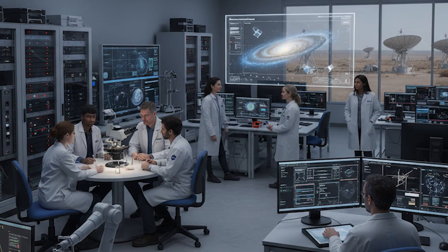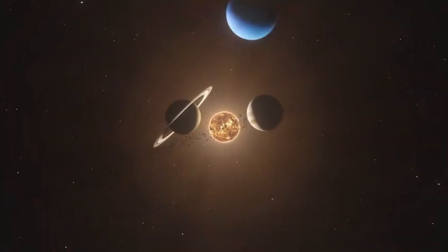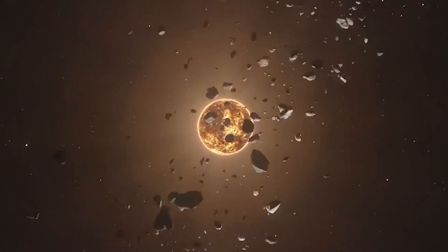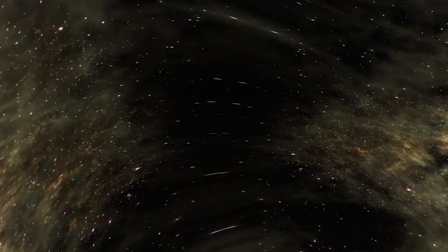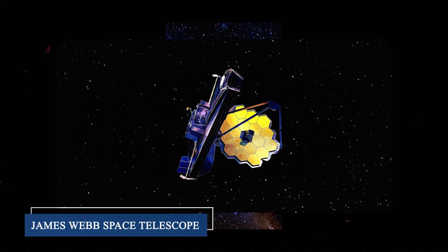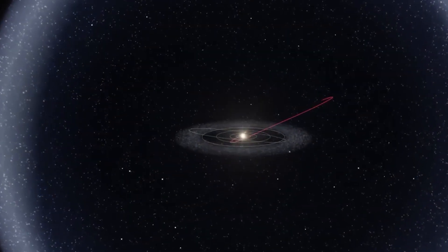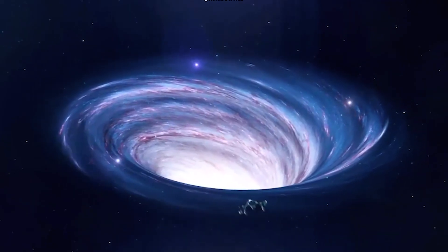Scientists have discovered that above our solar system lies a cosmic battlefield where gamma-ray storms rage with the power of a billion suns, while below us stretches an invisible ocean of dark matter currents that could reshape everything we know about space. The James Webb Space Telescope just revealed structures so enormous they dwarf our entire galaxy, and what we found changes everything about our place in the universe. Most people think space around our solar system is just empty darkness, but the truth is far more incredible.